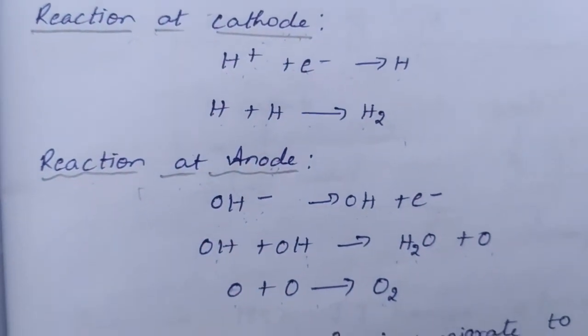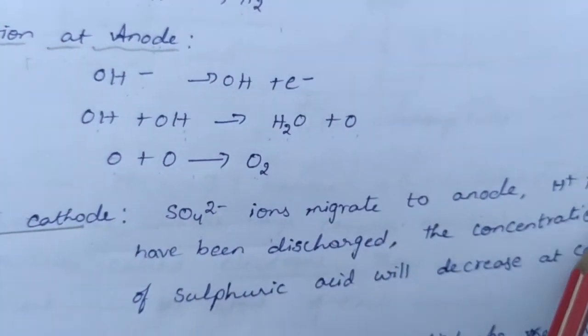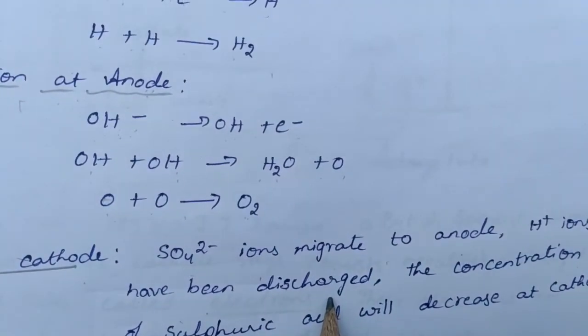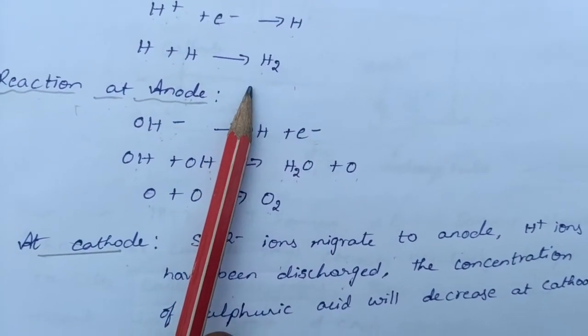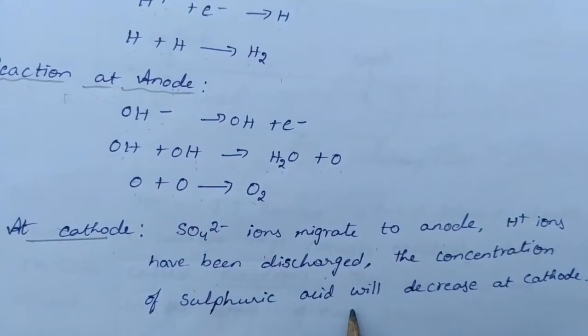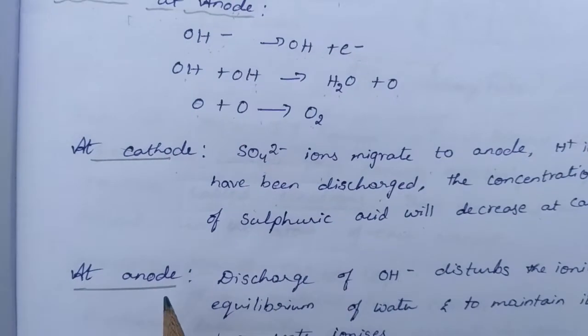At cathode, sulfate ions migrate to anode. H+ ions have been discharged. We know that from the reactions, hydrogen is discharged at the cathode, and the concentration of sulfuric acid will decrease at cathode.